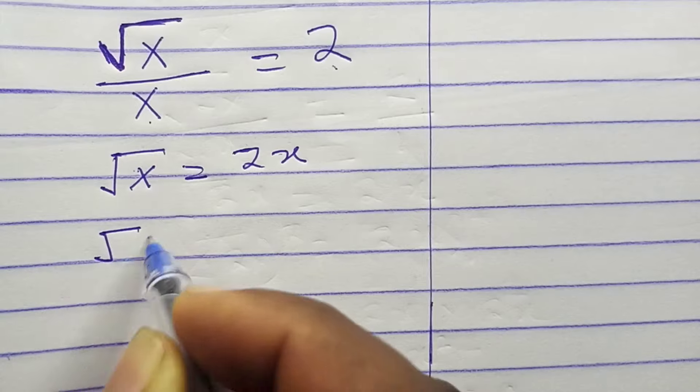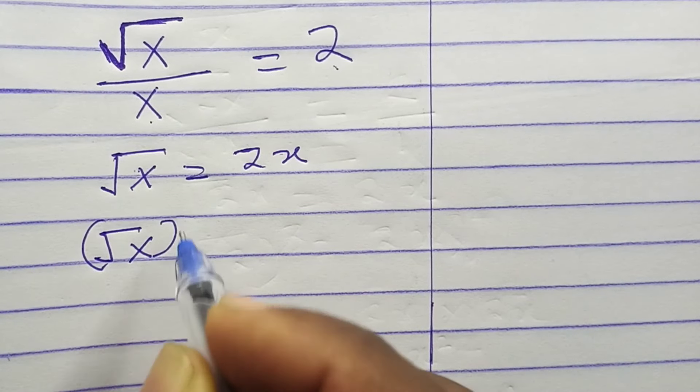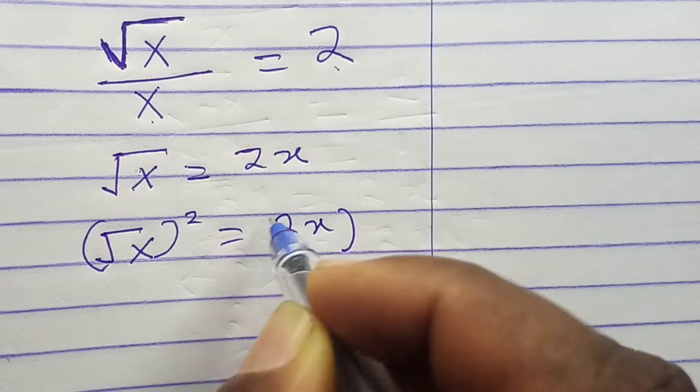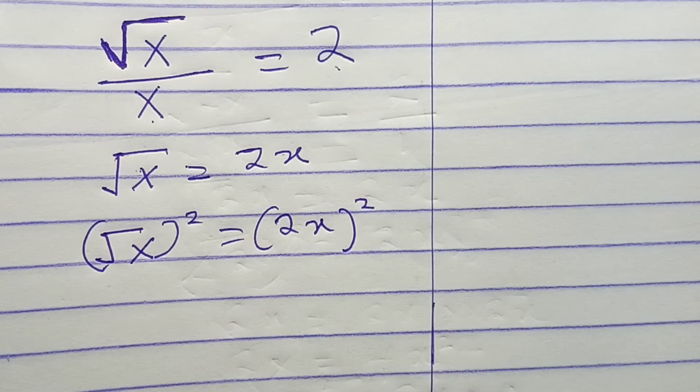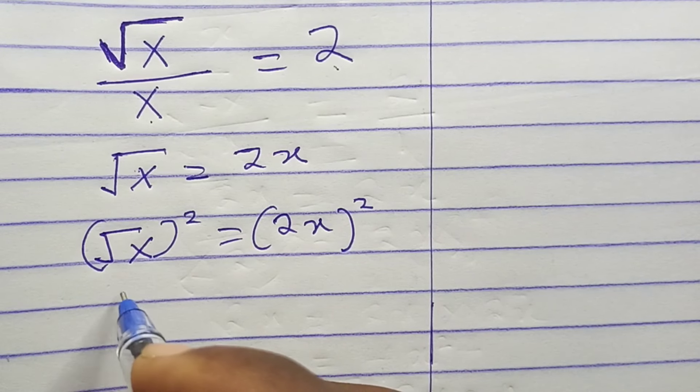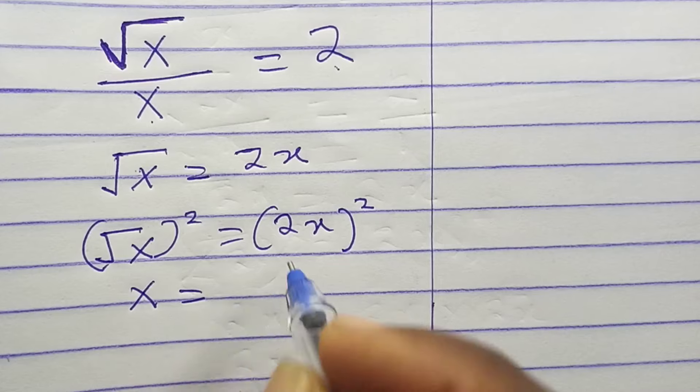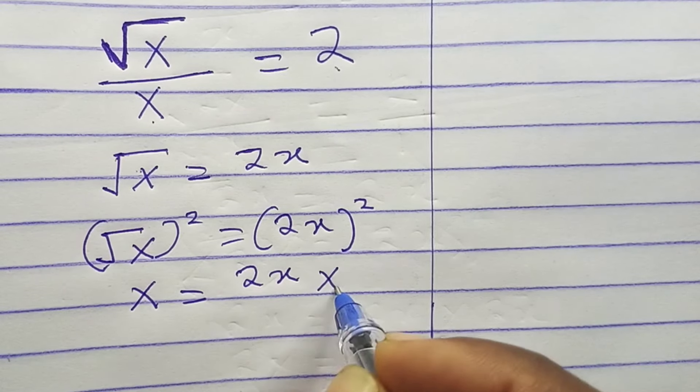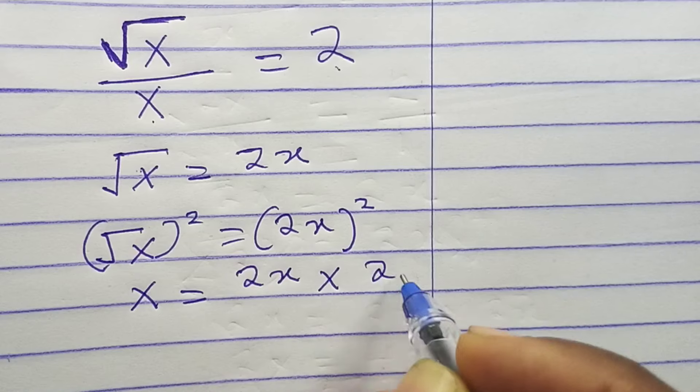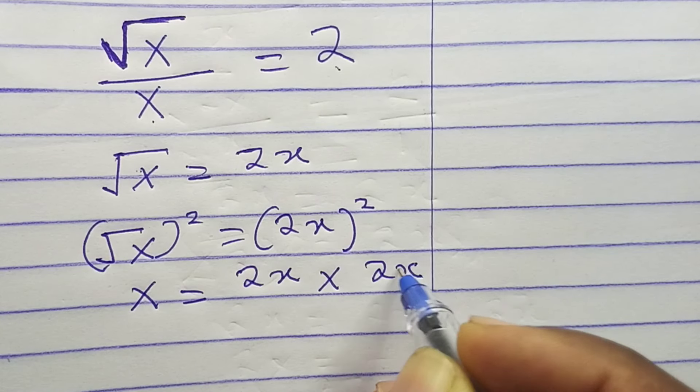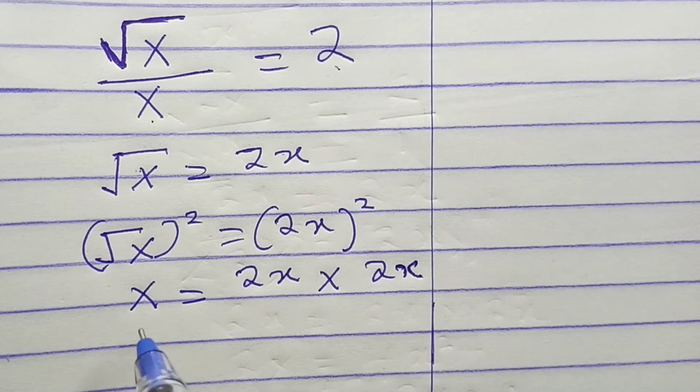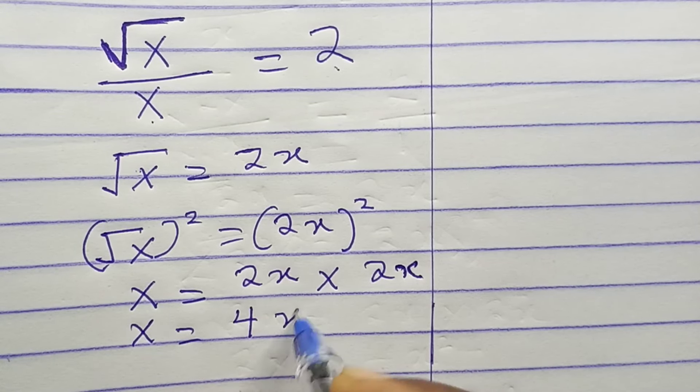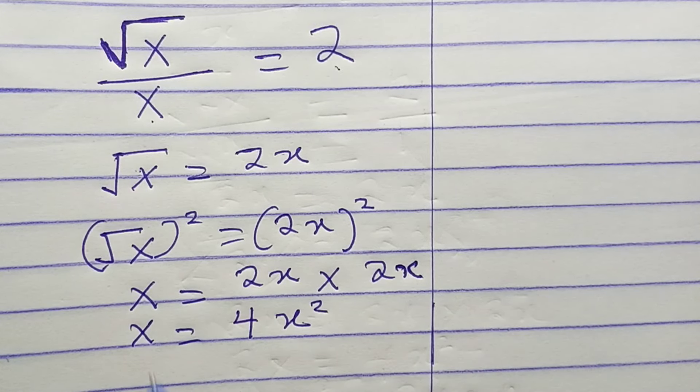Root x squared equals 2x squared. So we're going to have x equals 2x squared. Now 2x squared means 2x times 2x, so we're going to have x equals 4x squared.